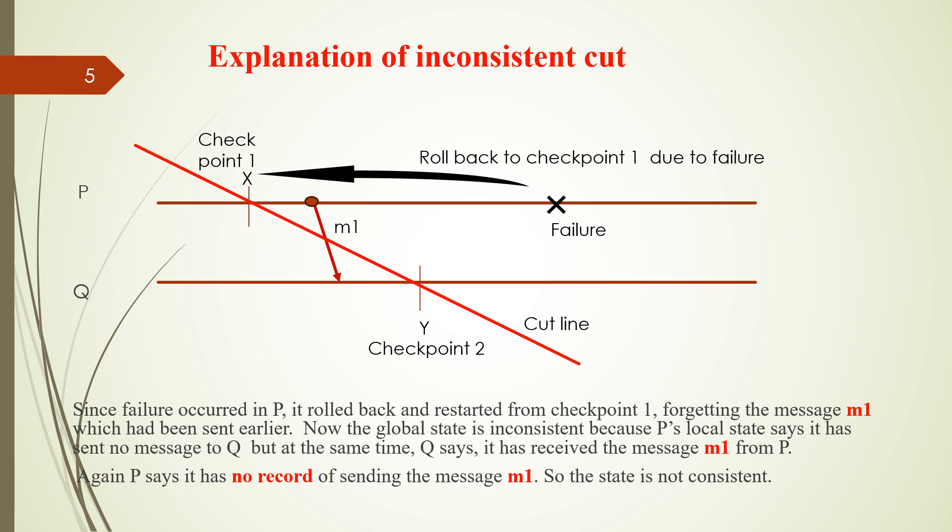P is saying it has not sent any message to Q, but Q is saying it has received the message M1 from P. Since both are different, now the global state is inconsistent. Now the global state is inconsistent.